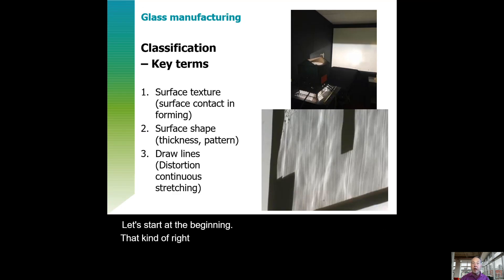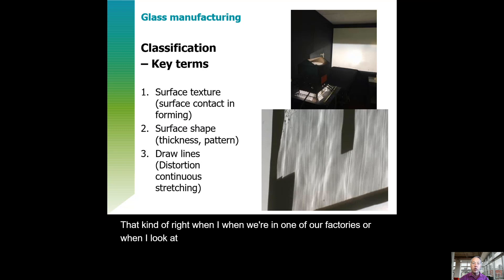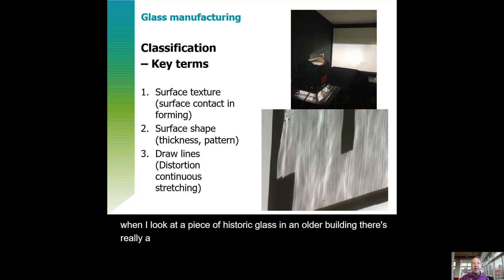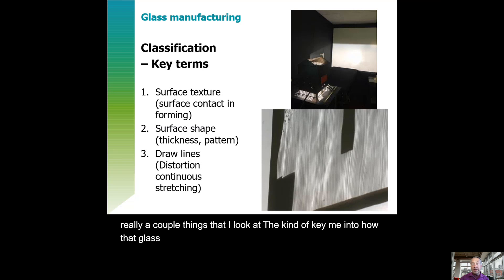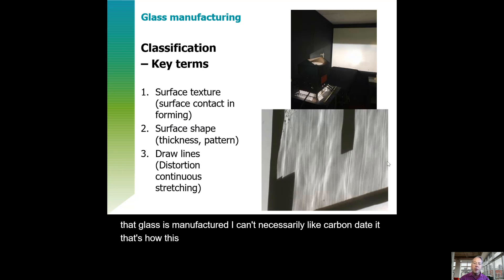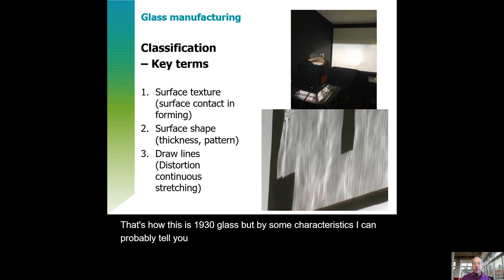When I look at a piece of historic glass in an older building, there are really a couple of things that key me into how that glass was manufactured. I can't carbon date it — I can't say this is exactly 1930 glass. But by certain characteristics, I can probably tell you what process that glass was made with.